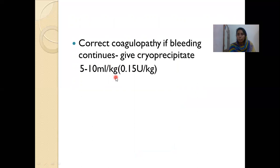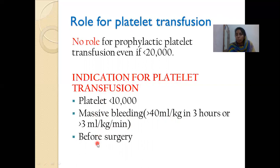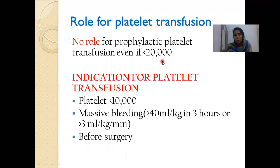Correct coagulopathy — if bleeding continues you can give cryoprecipitate at 5 to 10 mL per kg or 0.15 units per kg. Regarding platelet transfusion: there is absolutely no prophylactic role even if platelet count is less than 20,000. Definite indications are platelet count less than 10,000, or massive bleed more than 40 mL per kg in 3 hours or more than 3 mL per kg per minute, or before surgery. We avoid prophylactic platelet transfusions because platelets are also fluid causing risk of fluid overload, and there is destruction of platelets due to molecular mimicry between platelet antigens and NS1 antigen.